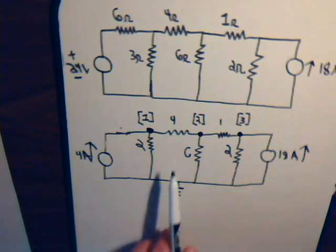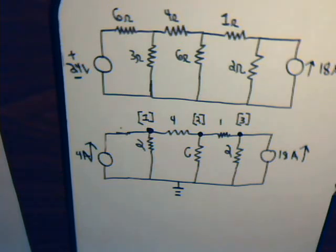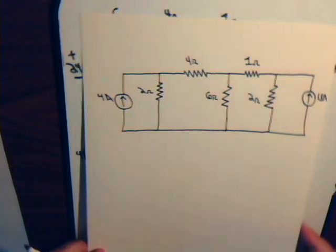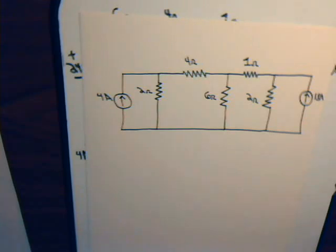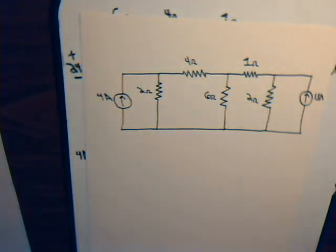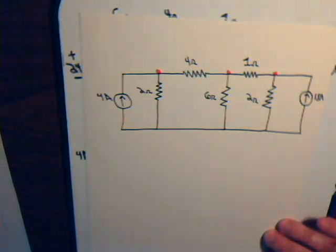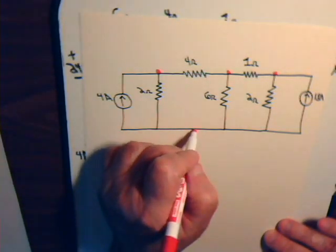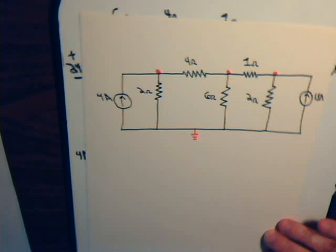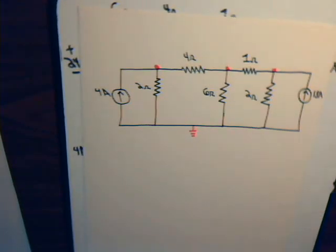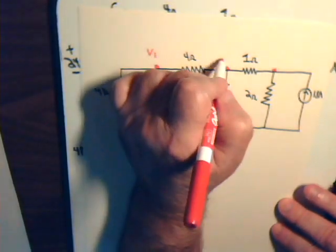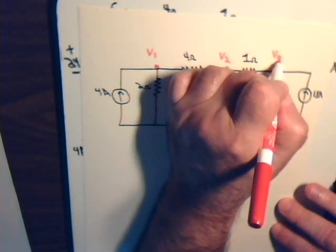These nodes will be at potentials V1, V2, and V3. If we can solve for these potentials, we can take the potential difference across the 4 ohm resistor, divide it by 4, and that gives us the current flowing through the resistor. That's our strategy. This is node 1, this is node 2, this is node 3, and all the bottom feeds into a common ground. We need to determine V1, V2, and V3.